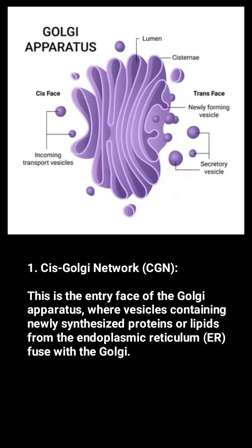1. Cis-Golgi network (CGN). This is the entry face of the Golgi apparatus, where vesicles containing newly synthesized proteins or lipids from the endoplasmic reticulum fuse with the Golgi.